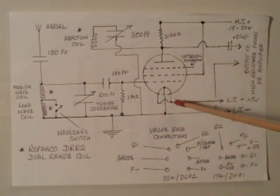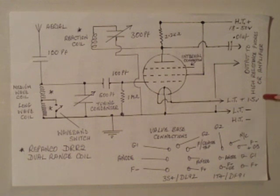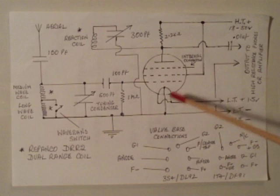The filament is connected to a 1.5 volt battery. In the case of the DL92 it's two separate filaments. You can either wire it in series for three volts or in parallel for 1.5. But the DF91 just has a straightforward filament, single filament.